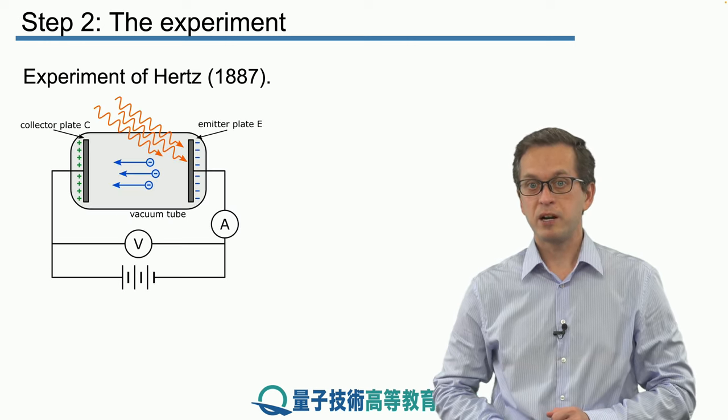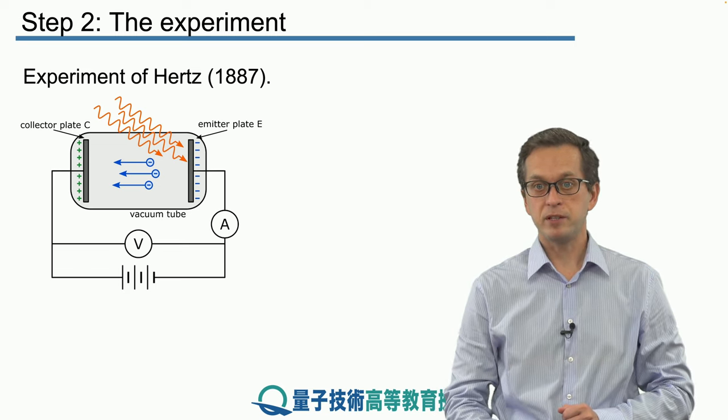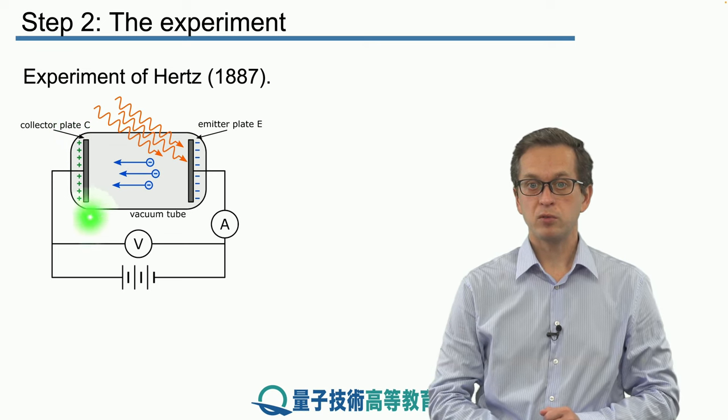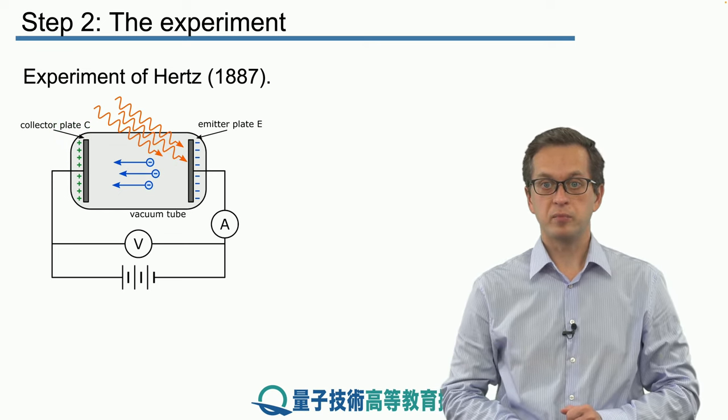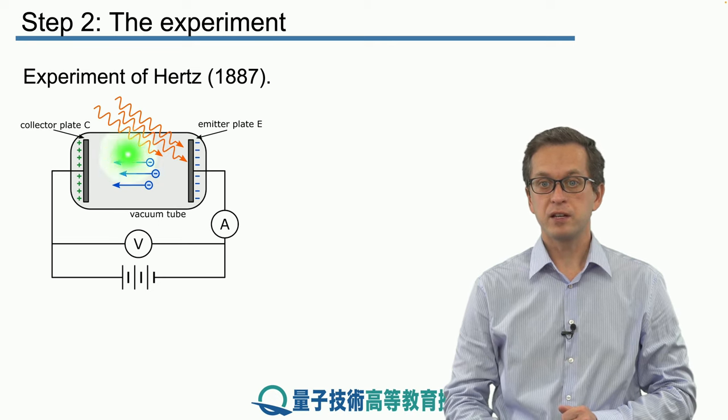So the basic experiment was performed by Hertz in 1887 and the setup is given here. He took a vacuum tube where he placed two charged capacitor plates connected to this very basic circuit.